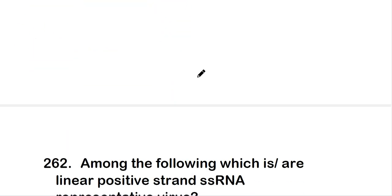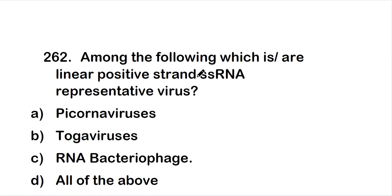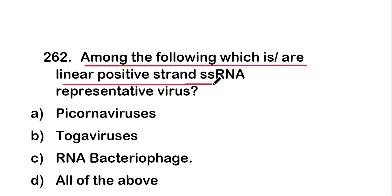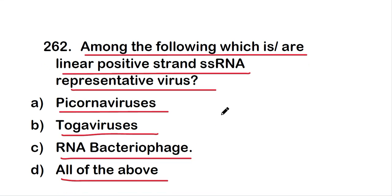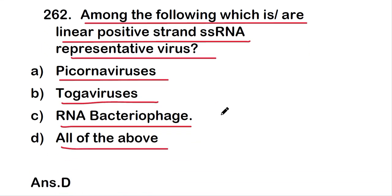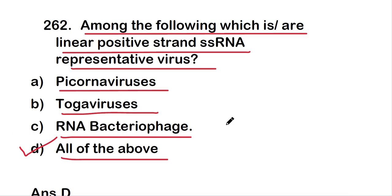The next question: among the following, which is or are linear positive strand single-stranded RNA representative virus? The options are picornaviruses, togaviruses, RNA bacteriophage, or all of the above. The right answer is option D — all of the above. All of these viruses are linear positive strand single-stranded RNA representative viruses.